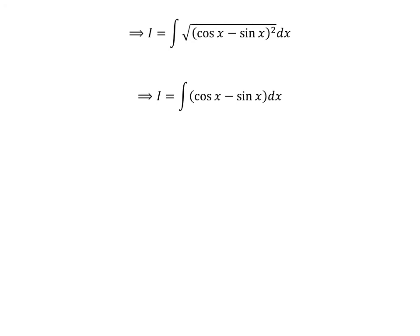Cancelling out the square root with square, we are left with the integration of cosine of x minus sine of x with respect to x.